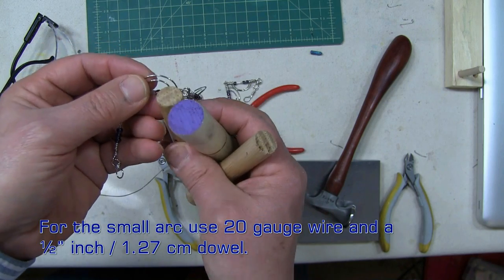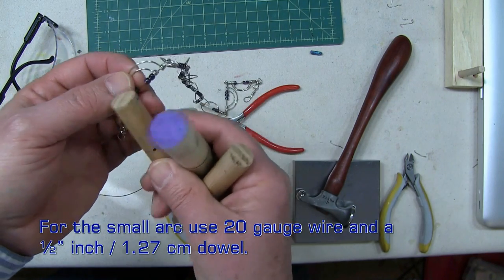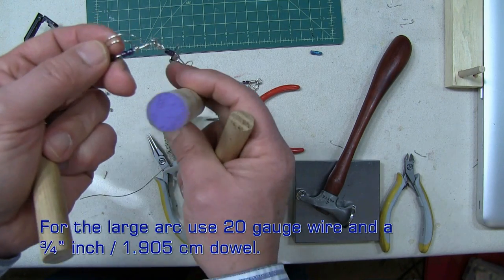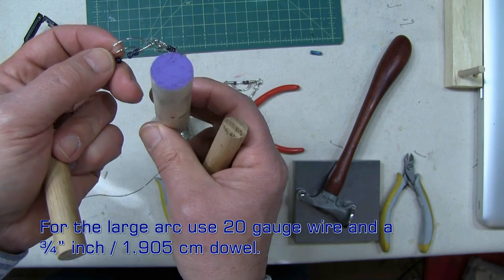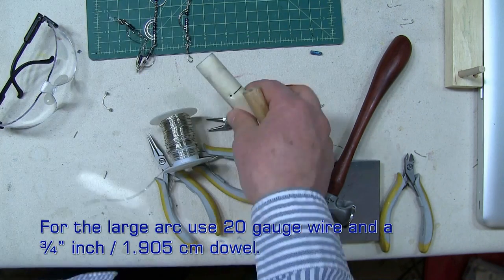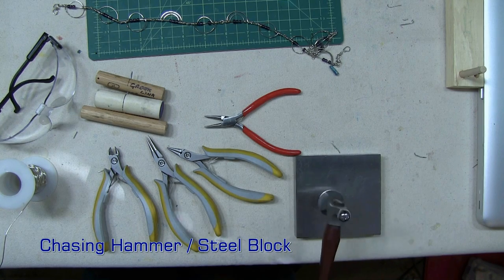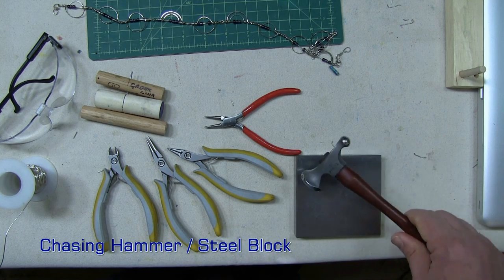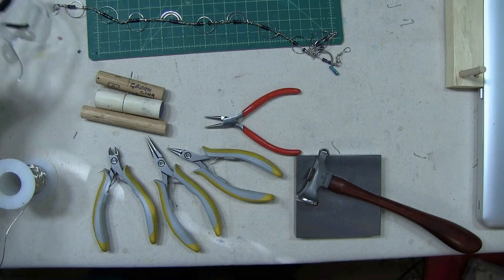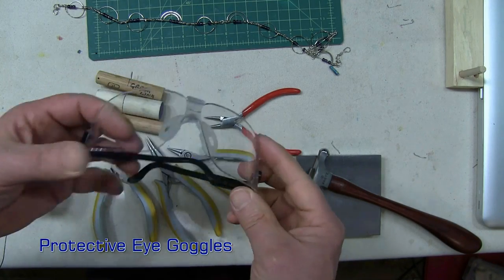For the smaller arc, I use the half-inch dowel. For the larger arc, I use the three-quarter-inch dowel. I'll also use a chasing hammer along with a steel block to hammer the links that I make, and a pair of goggles to protect my eyes.